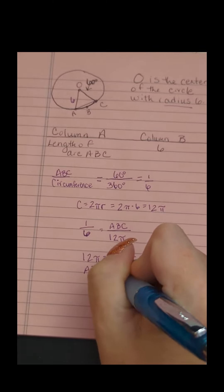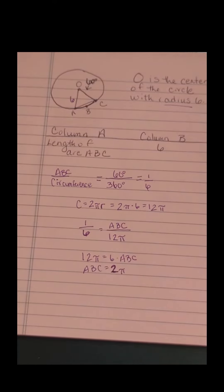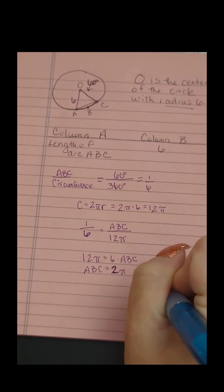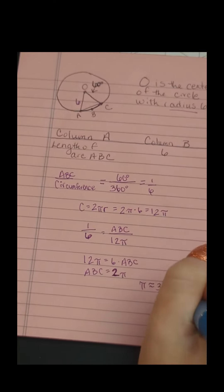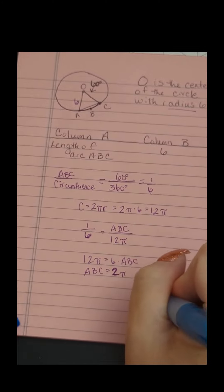Here's the quantitative comparison part. How does 2π compare to 6? You could use your on-screen calculator and an estimation for π that you have memorized, but you don't really need that step. We know that π is approximately 3.14, or a little bit bigger than 3.